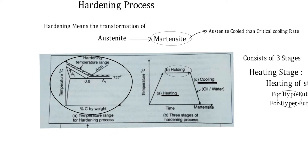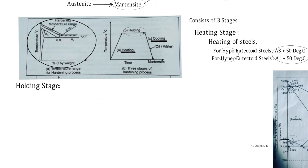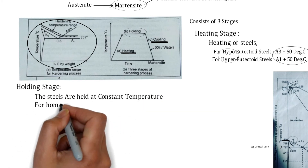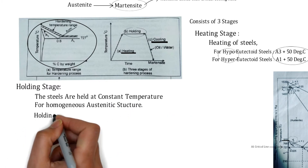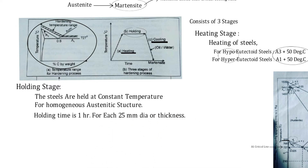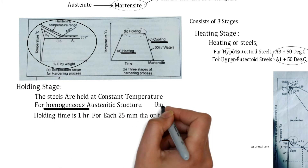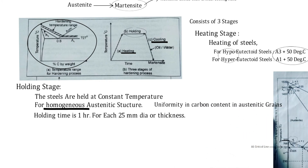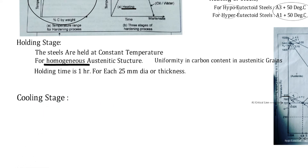Next is the holding stage. The steels are held at a constant temperature for the formation of a homogeneous austenitic structure. The holding time is one hour for each 25 mm diameter or thickness. This produces uniformity in carbon content throughout the austenitic grains.